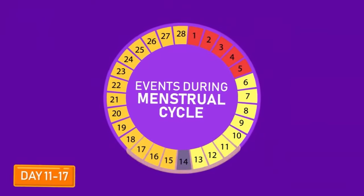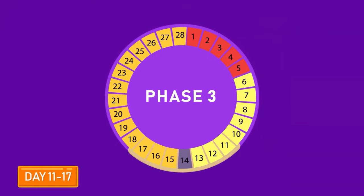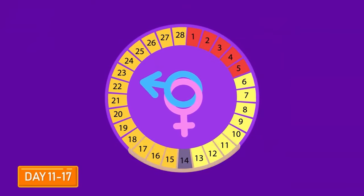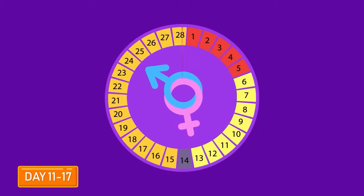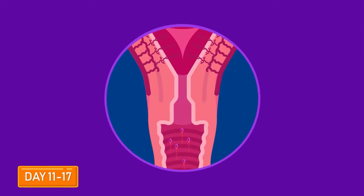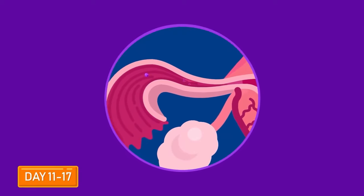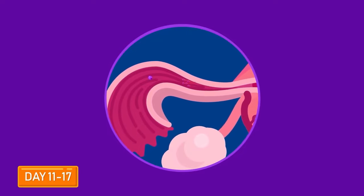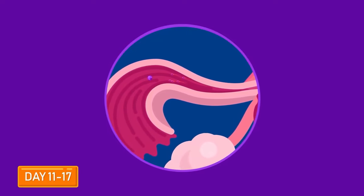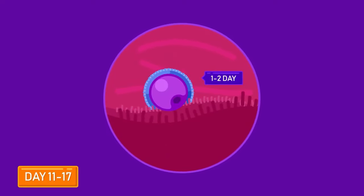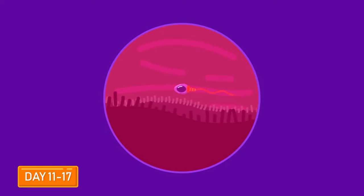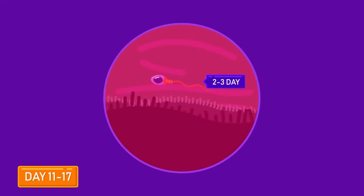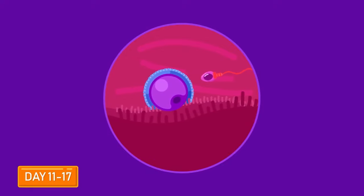Day 11 to 17 is Phase 3, the fertile phase of the menstrual cycle. Sperms deposited in the vagina from day 11 onwards can fertilize the ovum, which is released from the ovaries on day 14. The ovum can survive for 1 to 2 days after ovulation, while sperms can survive for 2 to 3 days in the female reproductive system. Hence, fertilization is possible up to day 17.